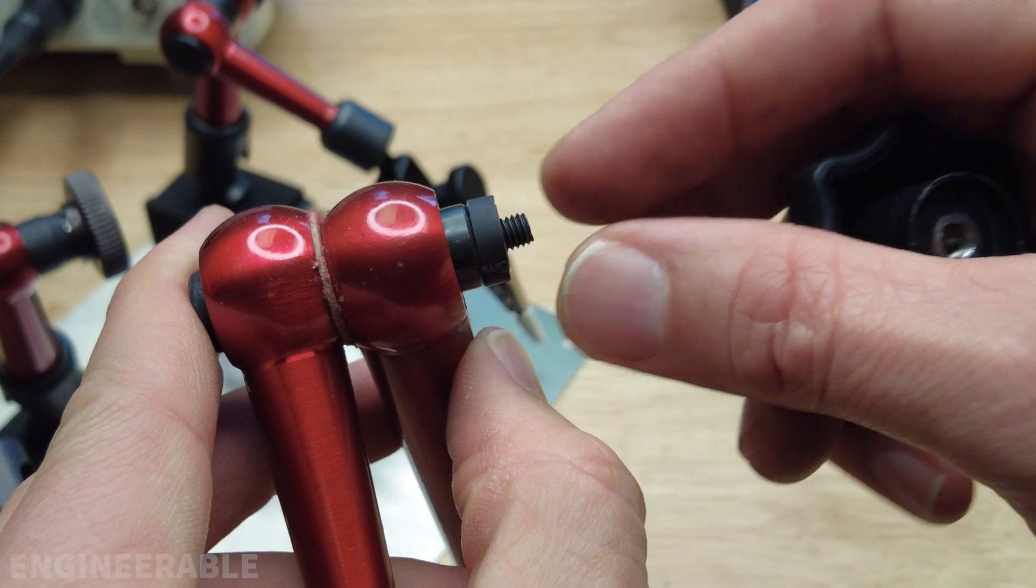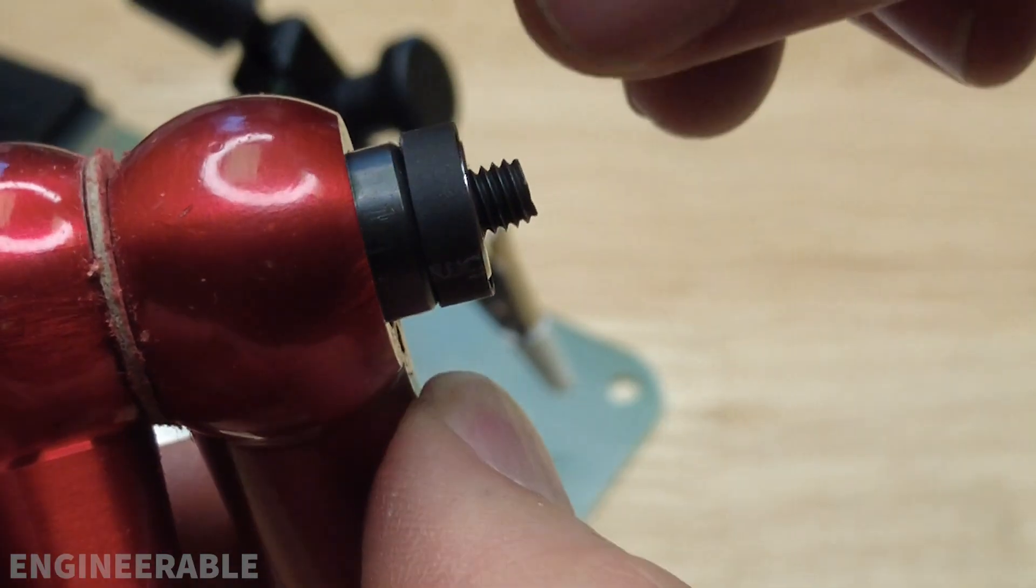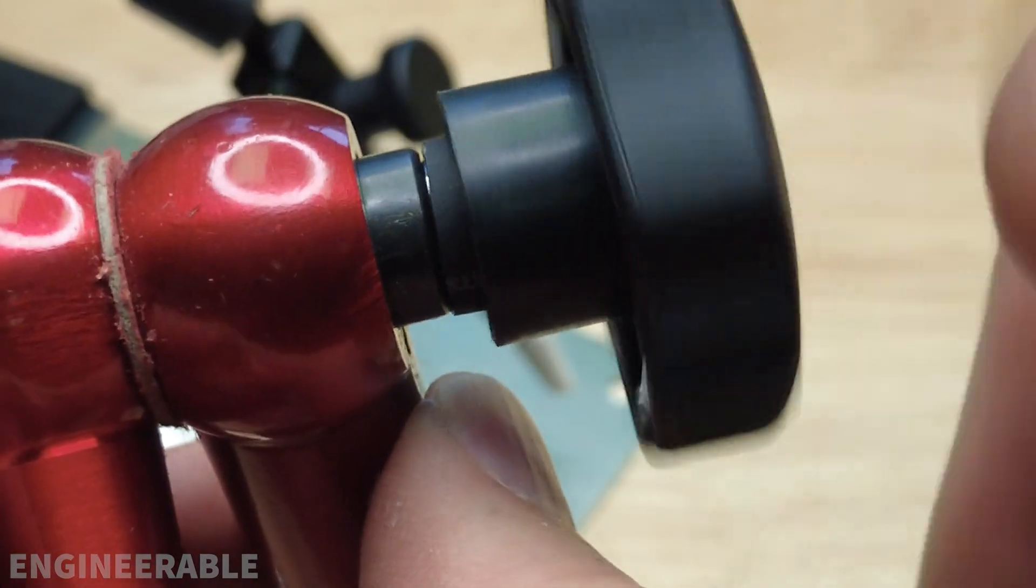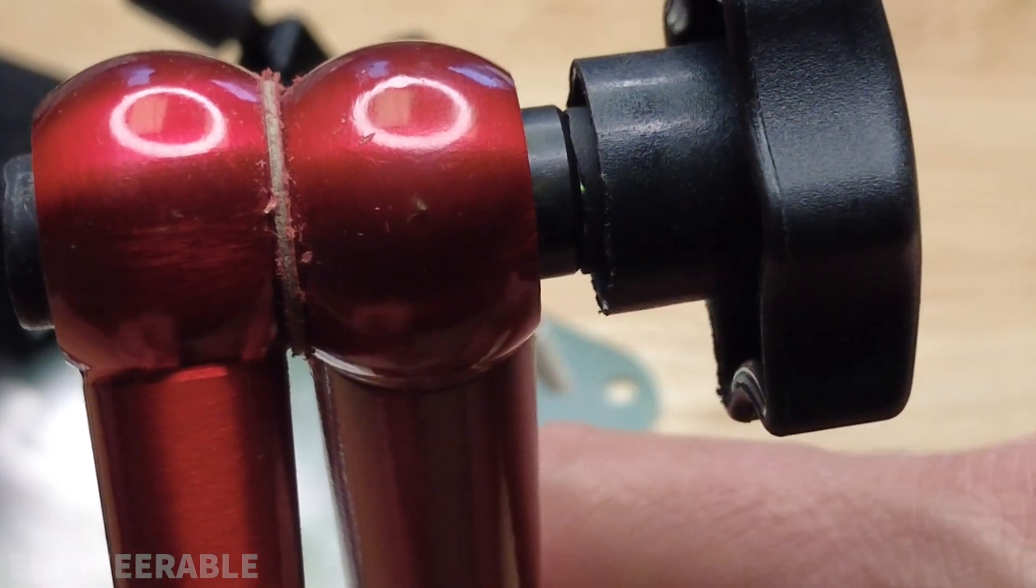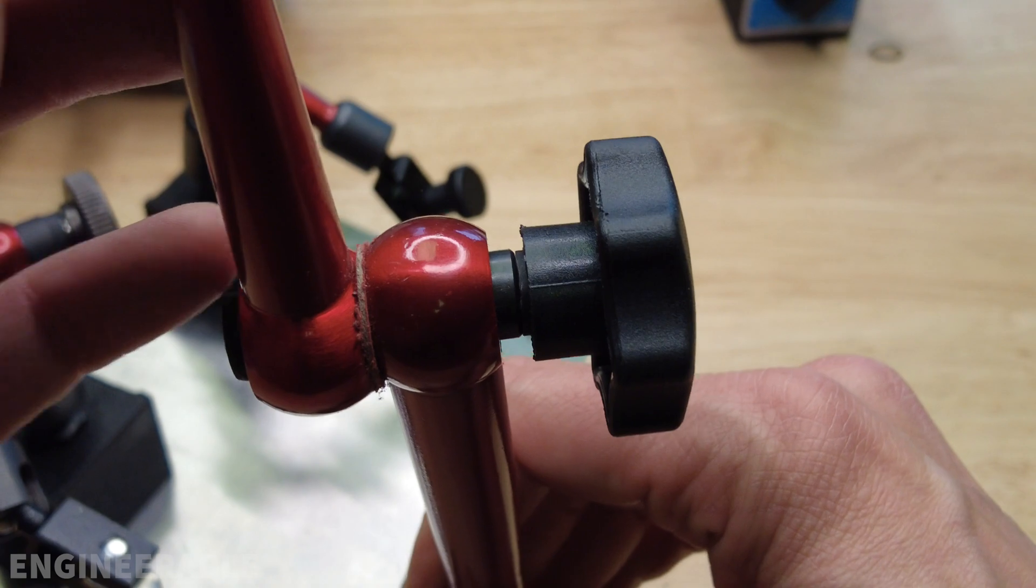You can also cut just a small piece of heat shrink and place it over the thrust bearing. Again, it has to be less wide than the thrust bearing because it can't push against the thumb wheel, otherwise it'll also stop the thumb wheel from spinning as you're back driving the arm.